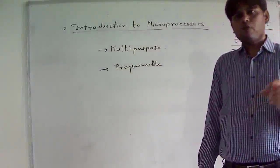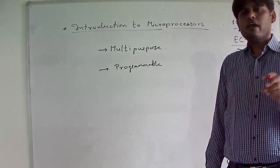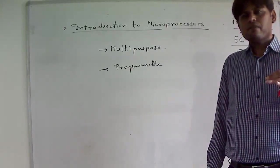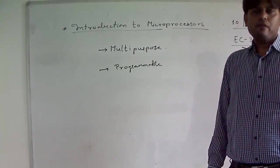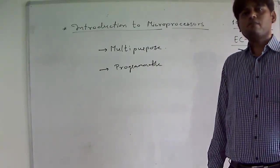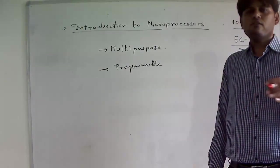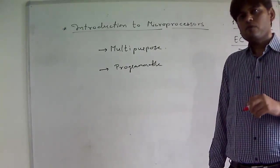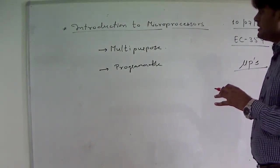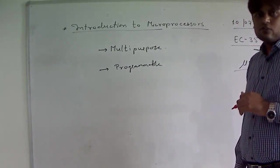That means we can program it to perform a specific task — that's why we call microprocessor a programmable device. We can write a program for a specific task, we can burn the program into memory or store that program into memory, and then the microprocessor reads the binary instructions from memory and performs the specific task. So it is a multipurpose electronic device and it is a programmable electronic device.